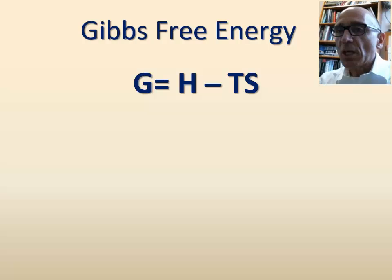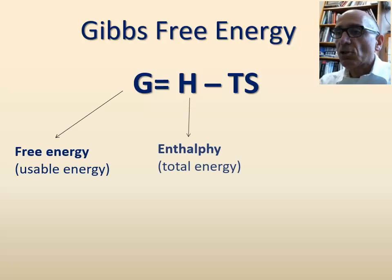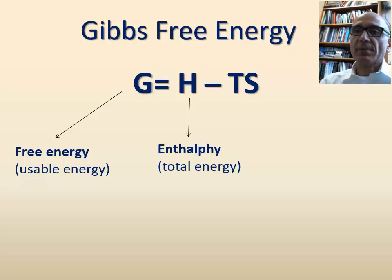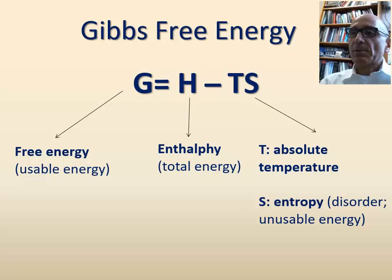where G is free energy, H is enthalpy or total energy of a system, T is the absolute temperature of the system, and S is the unusable energy, also known as entropy or disorder.